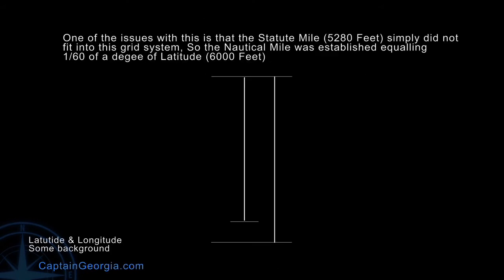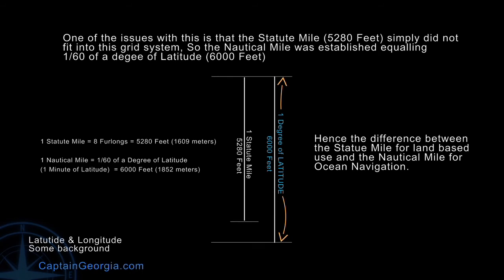The issue with the statute mile — 5,280 feet — remember the Romans, then the Queen, and then more changes — it just didn't fit in the grid system that we use for navigation. So the nautical mile was established, equaling one minute of latitude, one-sixtieth of a degree, or 6,000 feet. We use the statute mile on land, and we use the nautical mile on the ocean. That's the difference between the statute mile and the nautical mile.